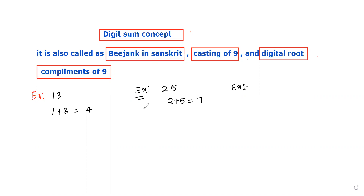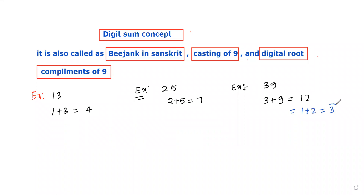Let me take another example. Suppose you are taking 39. The DigitSum is 3 plus 9, that gives 12. But 12 is not the DigitSum of 39. Why? Because in this concept, the result must be a single digit number. So we have to convert it again into a single digit number by finding the DigitSum of 12: 1 plus 2 gives 3. So 3 is the DigitSum of 39.